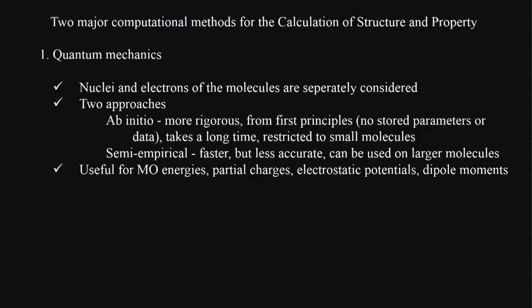There are 2 different major computational methods for calculating 3-dimensional structures as well as some properties. One is called the quantum mechanics approach. In quantum mechanics, the nucleus and electrons of the molecules are separately constituted — you look at electrons separately and the nucleus separately.